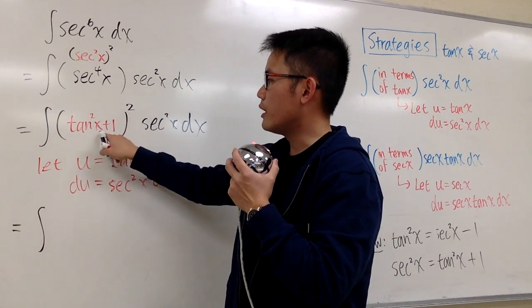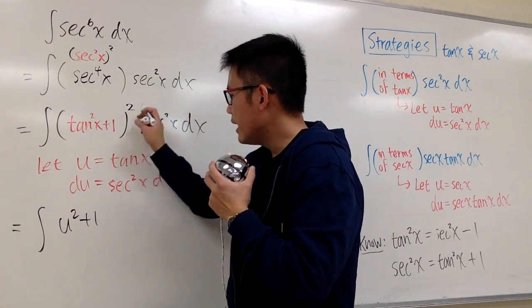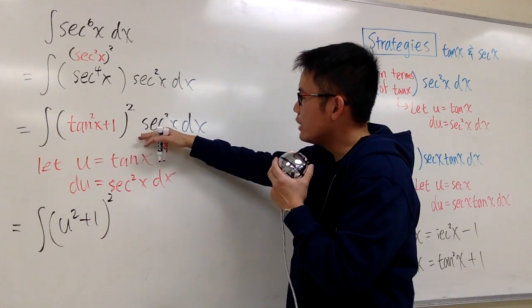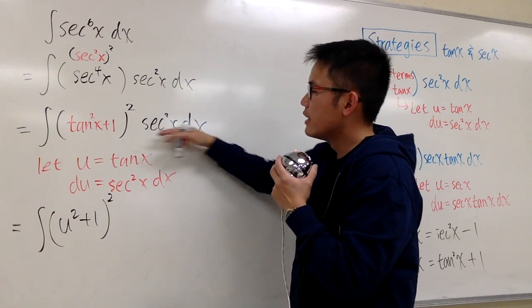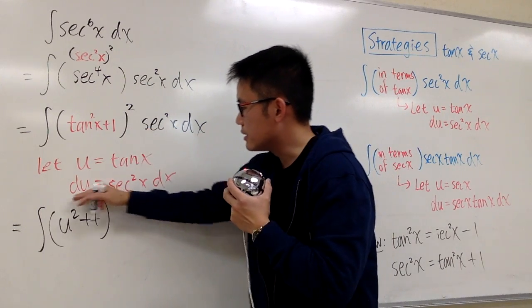This will be the integral, tangent square x, it will be u square, we have u square plus 1, and then raised to the 2nd power. On the side, we have secant square x dx. This differential is exactly the same as du, so you can just rewrite this as du.